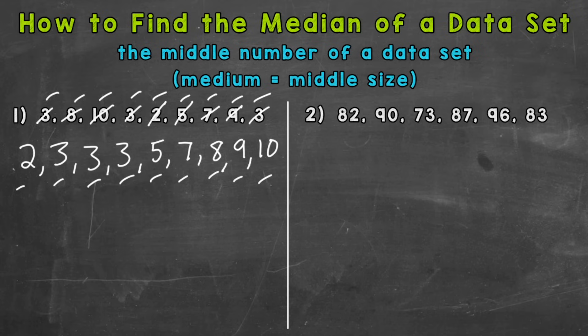So once we have them in order, we need to find the middle number. So we have nine numbers in that list. So the fifth number will be our median. So one, two, three, four, and five. So five happens to be our median or middle number. So median equals five.